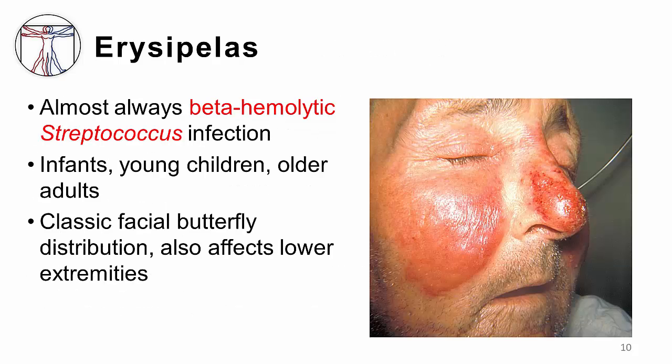Erysipelas is almost exclusively caused by the beta-hemolytic strep species, usually group A strep, but occasionally group B, C, and G as well. Beta-hemolytic species are those strep that produce clear halos on blood agar plates because of streptolysin, an exotoxin produced by the bacteria which causes complete lysis of red blood cells. Rarely, erysipelas may be caused by Staph aureus, but this is very rare.